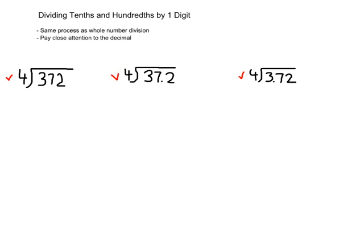Let's begin with whole number division: 372 divided by 4. We're going to figure out how many groups of 4 can go into 3, or 4 times what comes as close to 3 as possible. Since 4 is already greater than 3, the answer is 0. The 0 is placed over the 3 to keep our place value, and then we calculate 4 times 0, which is 0. We subtract 3 minus 0, and our answer is 3.